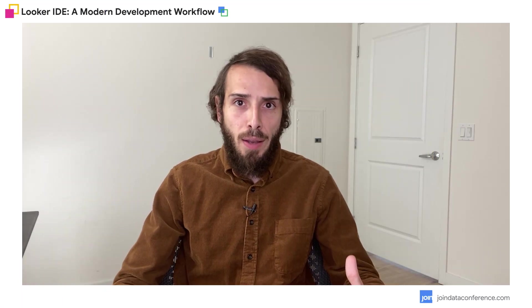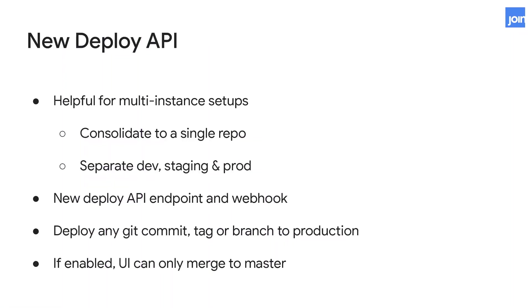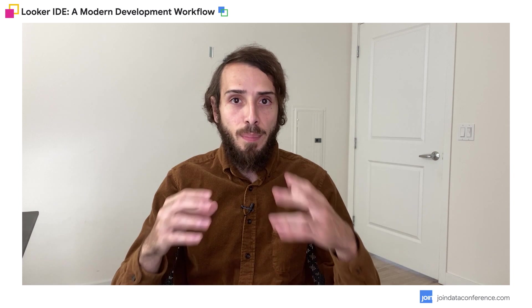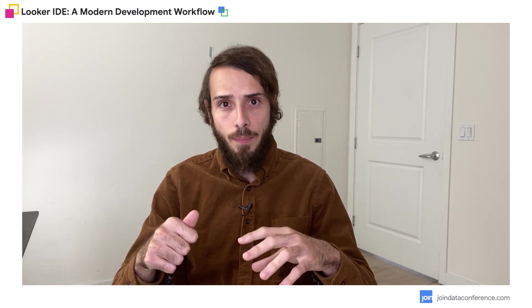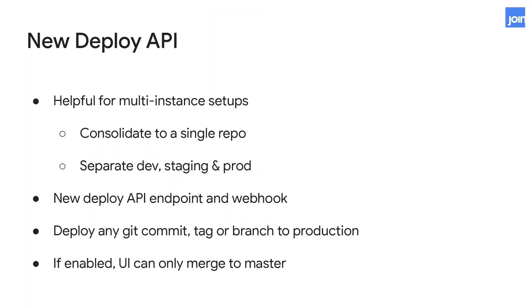We have also added a new advanced deploy API. Several of our customers have more than one instance because they want to separate their development, staging and production environments. Until now, that meant they needed to create a different repository for each of these environments. Now, with this feature, they can have just a single repository that works for all environments. Using this feature in the UI, they can only merge to master, and then they will need to use the deploy hook — the deploy endpoint — to deploy to production.